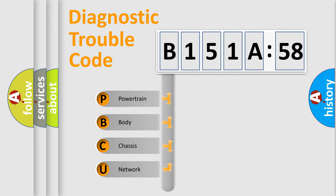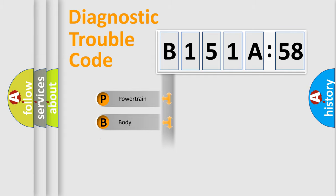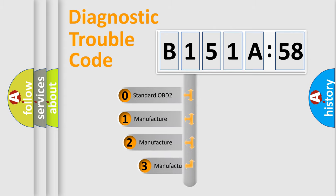We divide the electric system of automobile into four basic units: Powertrain, body, chassis, network. This distribution is defined in the first character code.